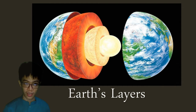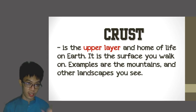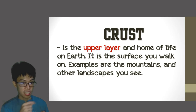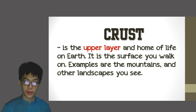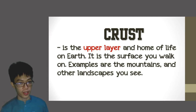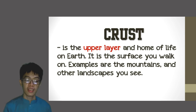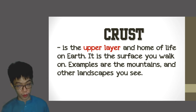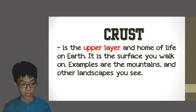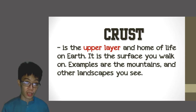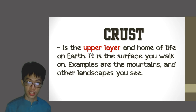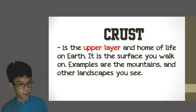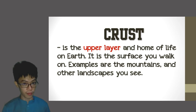One of the layers of the earth is the crust. In comparison to the egg analogy, that is the shell of the egg. In terms of the earth, the crust refers to the upper layer of the earth — it is the home of life. It is the surface you walk on. For example, walking down the street is part of the crust. Mountains are also part of the earth's crust.